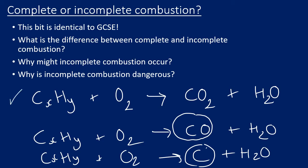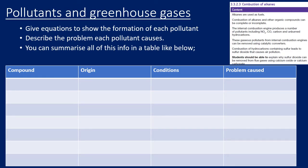For complete combustion it's always carbon dioxide and water, and you need to balance the equation. You need to be aware that carbon monoxide is a highly toxic gas — it binds to hemoglobin in blood, preventing blood from carrying oxygen, which is why incomplete combustion is dangerous. Incomplete combustion occurs when there is an insufficient supply of oxygen. Alkanes are used as fuels, and the key skill here beyond the GCSE knowledge is balancing the equations.